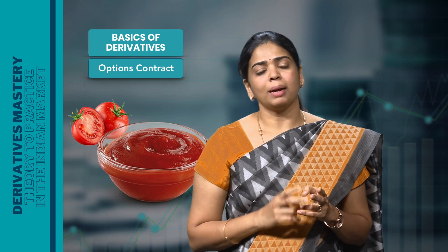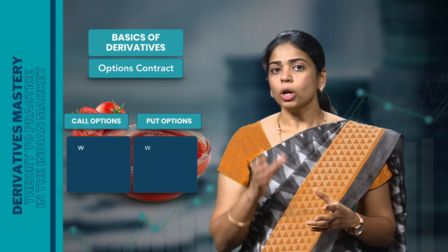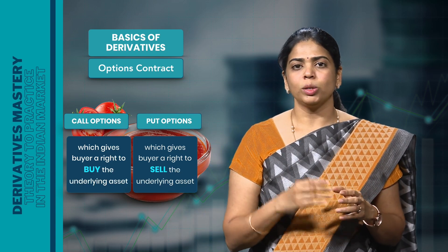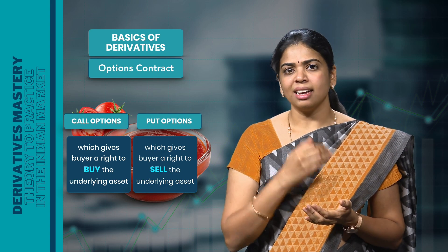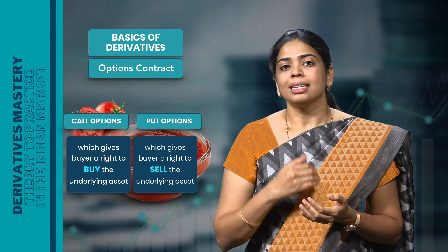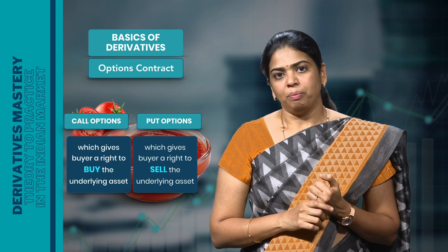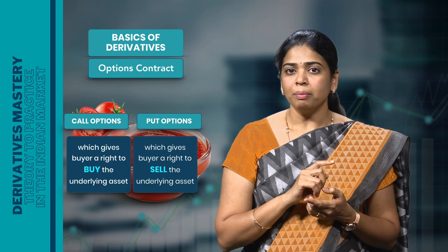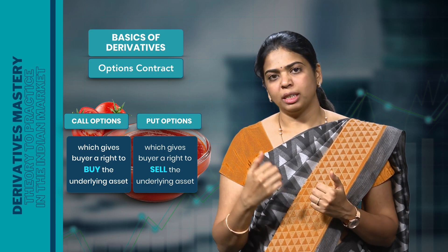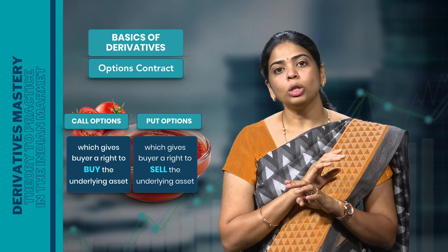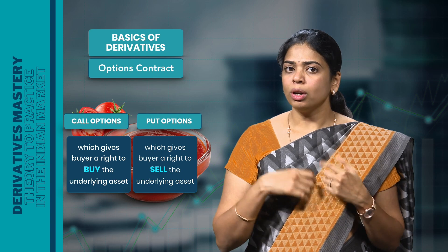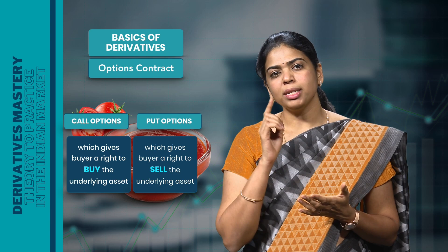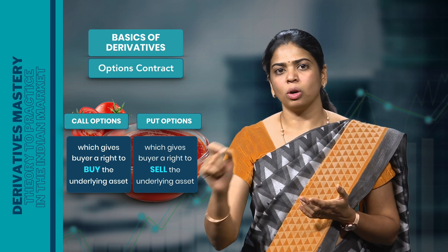There are two types of options: call and put options. A call option gives a right to the buyer of the underlying asset, and a put option gives a right to the seller of the underlying asset. The underlying asset in our example is tomato. The ketchup company, being the buyer, has to buy a call option from the trader, which gives the company the right but not the obligation to fulfil the contract. In return, a premium of Rs 3 per kg is paid by the buyer to the seller of the call option.